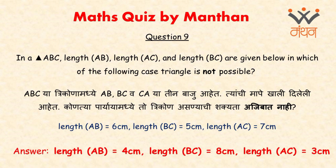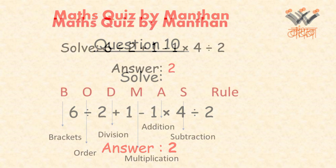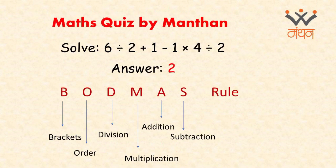Here is our last question for the quiz: solve 6 divided by 2 plus 1 minus 1 into 4 divided by 2. The answer is 2, again based on the BODMAS rule.